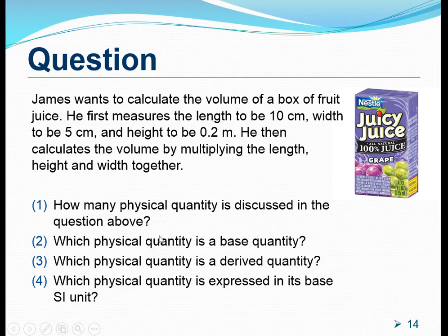Now, let's try to understand the key concepts a little bit better by having a look at this question. The question says this. James wants to calculate the volume of a box of fruit juice. He first measures the length to be 10 centimeters, width to be 5 centimeters, and the height of the box to be 0.2 meters. He then calculates the volume of this box by multiplying the length, height, and the width together. So, the question is this. How many physical quantities is discussed in the question above?